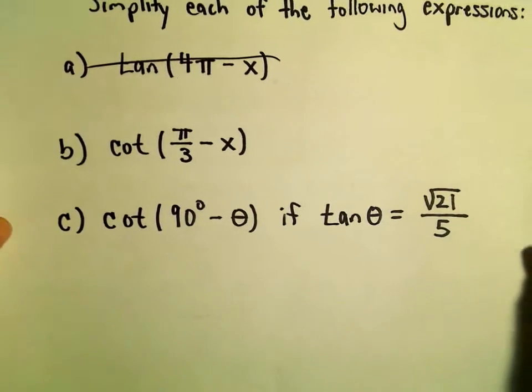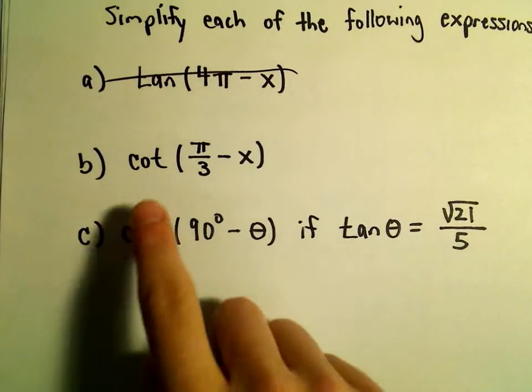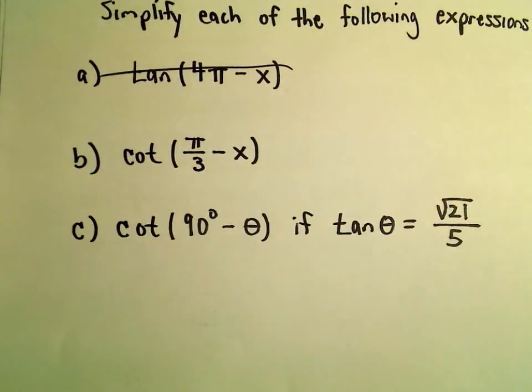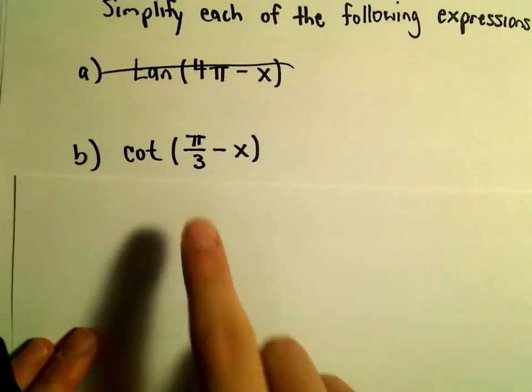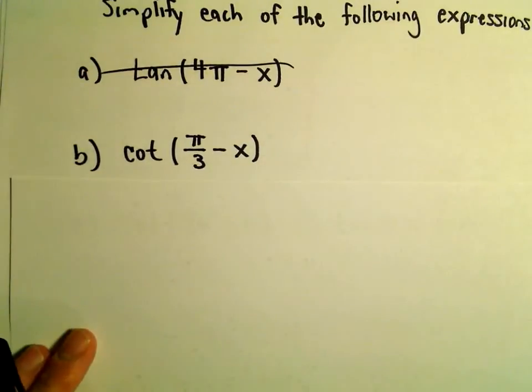Another example of simplifying expressions. We're going to simplify cotangent of π/3 minus x. We can't use our co-function identity because we need π/2.